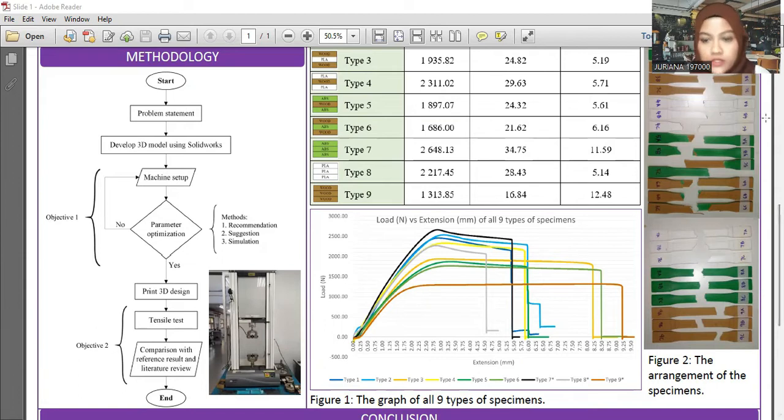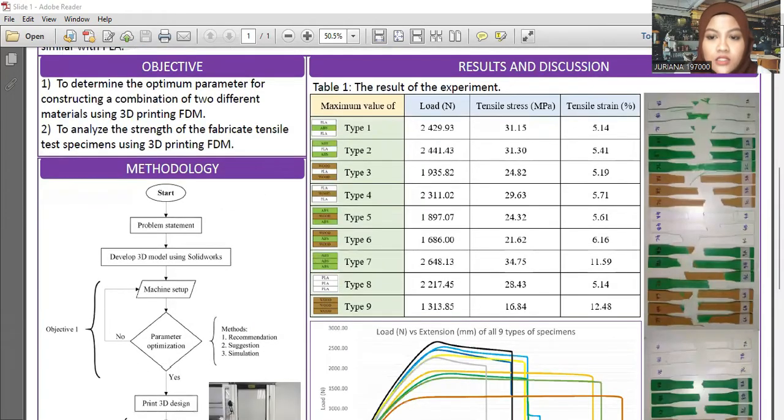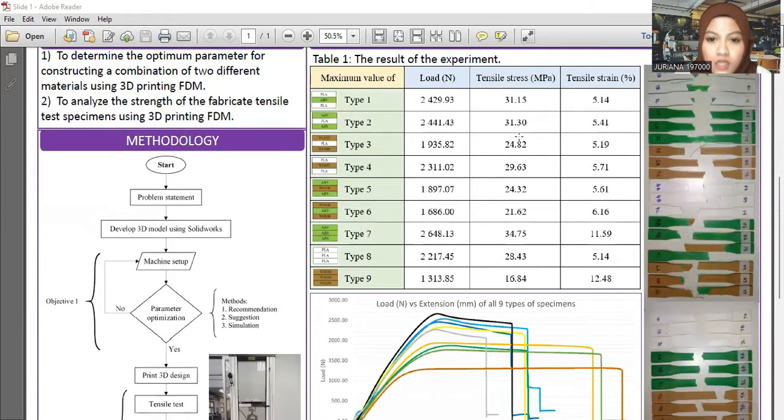This is the results and discussion section. I've collected the data and presented it in table form. You can see Type 1, Type 2 through Type 9. Type 7 and 9 are the reference specimens. In the first column, I've included pictures showing the layer arrangement of the specimens.